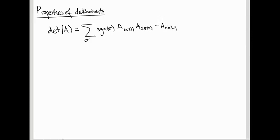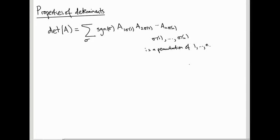So remember, this is a product of matrix elements, one from each row, satisfying the property that no two are in the same column — so sigma(1), sigma(2), up to sigma(n) is a permutation of 1 to n. You sum over all possible permutations, and the sign is plus or minus 1 depending on whether you needed an odd or even number of transpositions to get back to the original ordering 1 up to n.